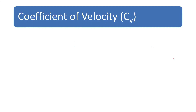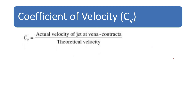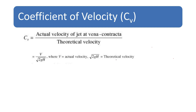Coefficient of velocity is defined as the actual velocity of the jet at the vena contracta divided by the theoretical velocity. The formula is CV = V divided by the square root of 2gh, where V is the actual velocity and the square root of 2gh is the theoretical velocity.